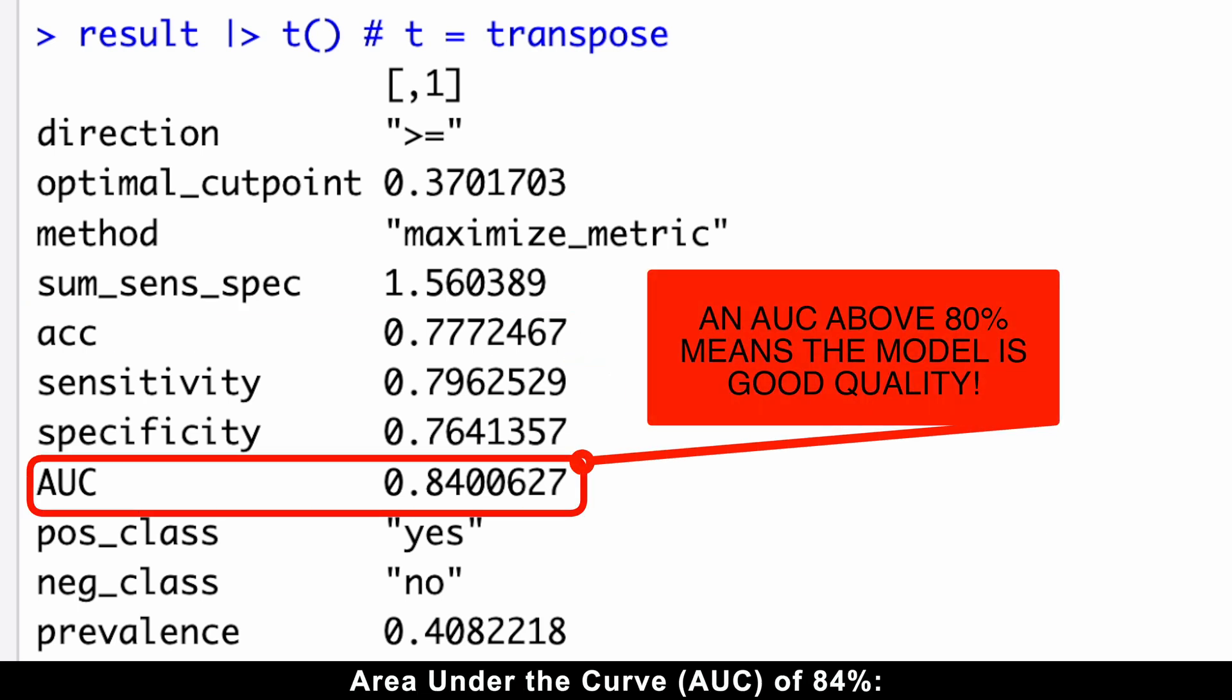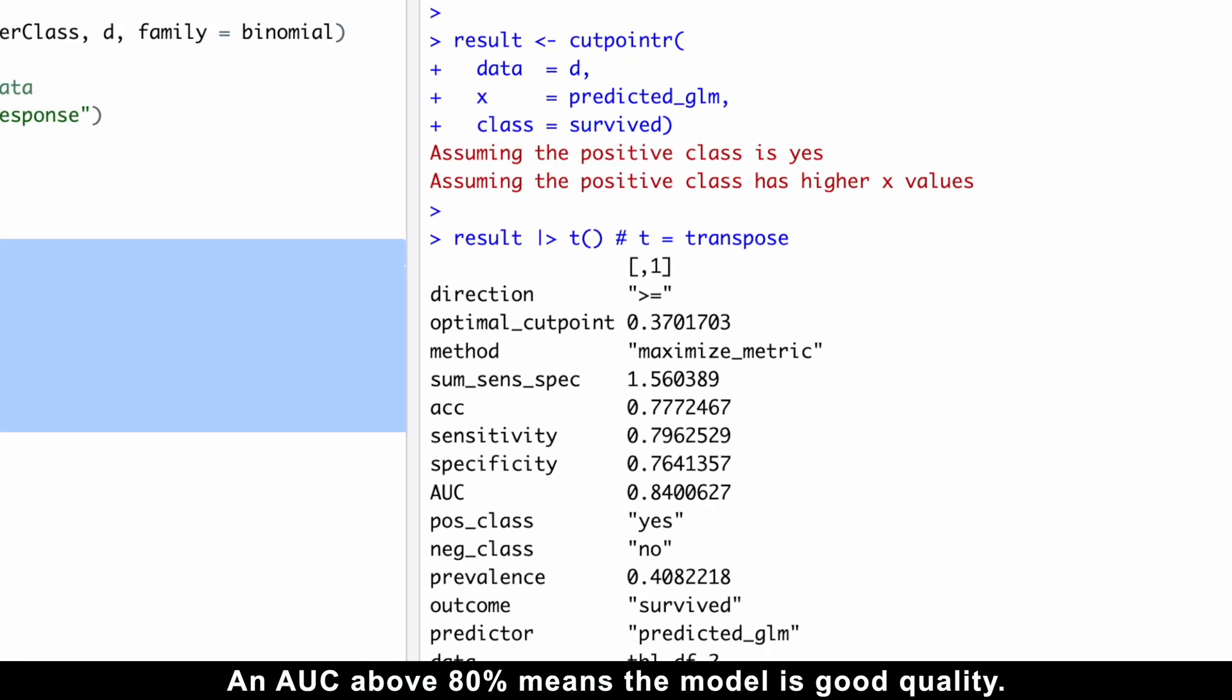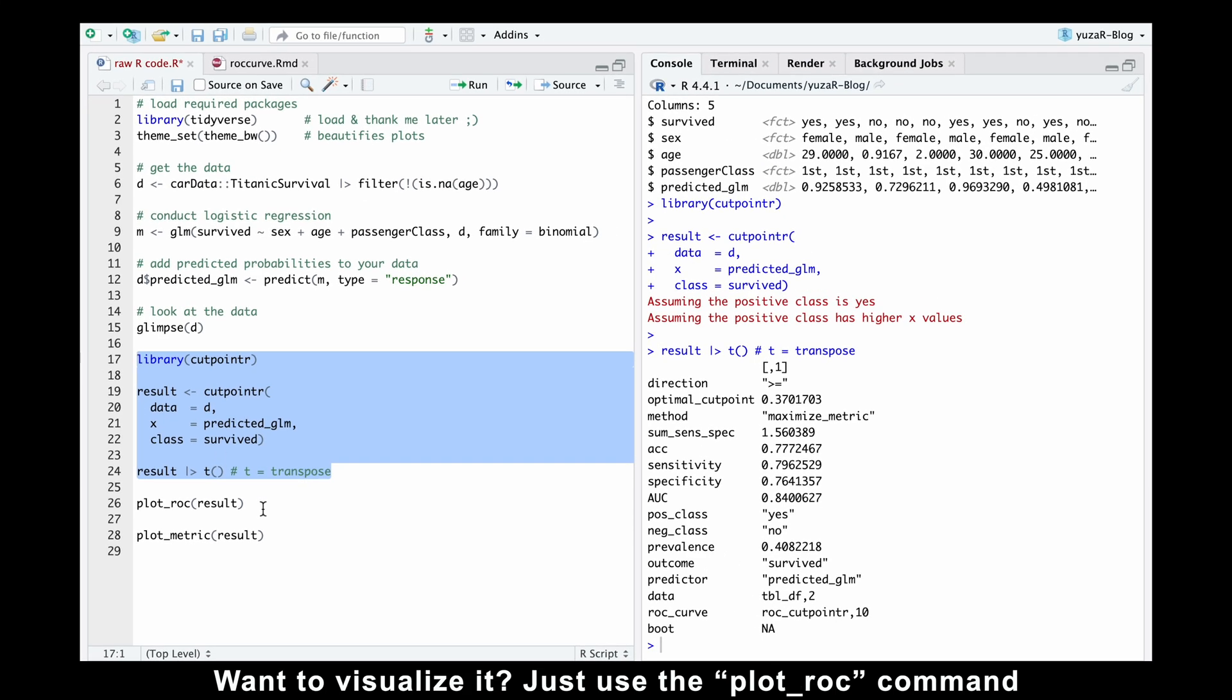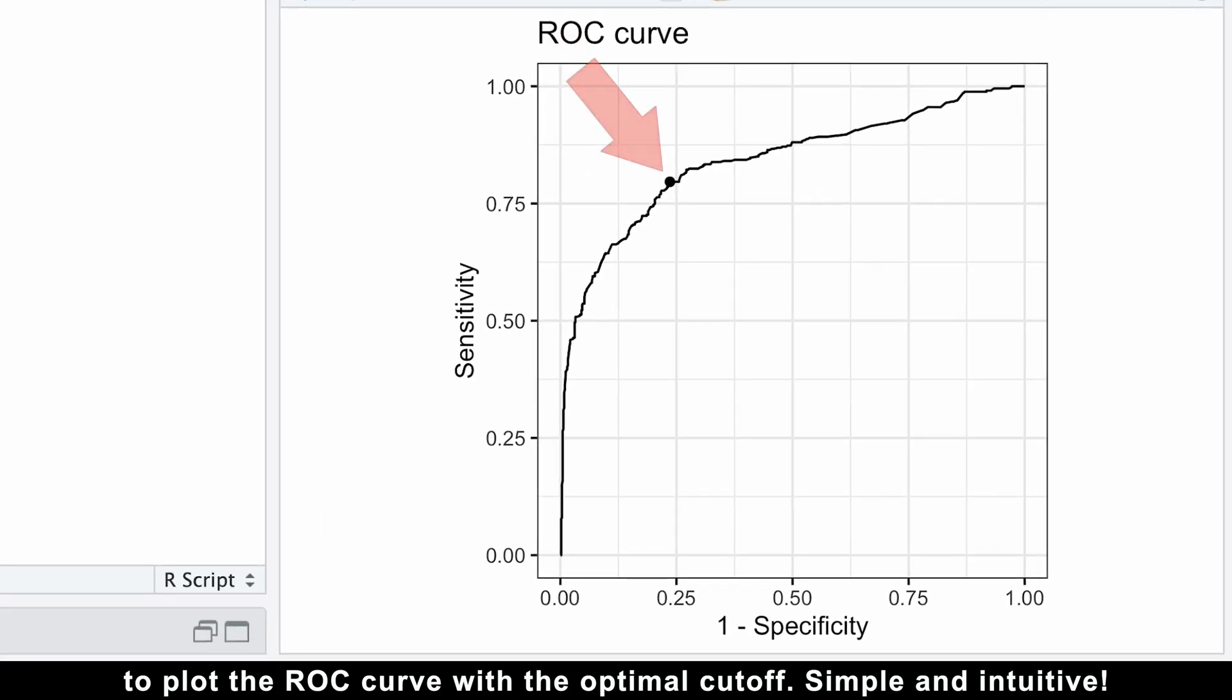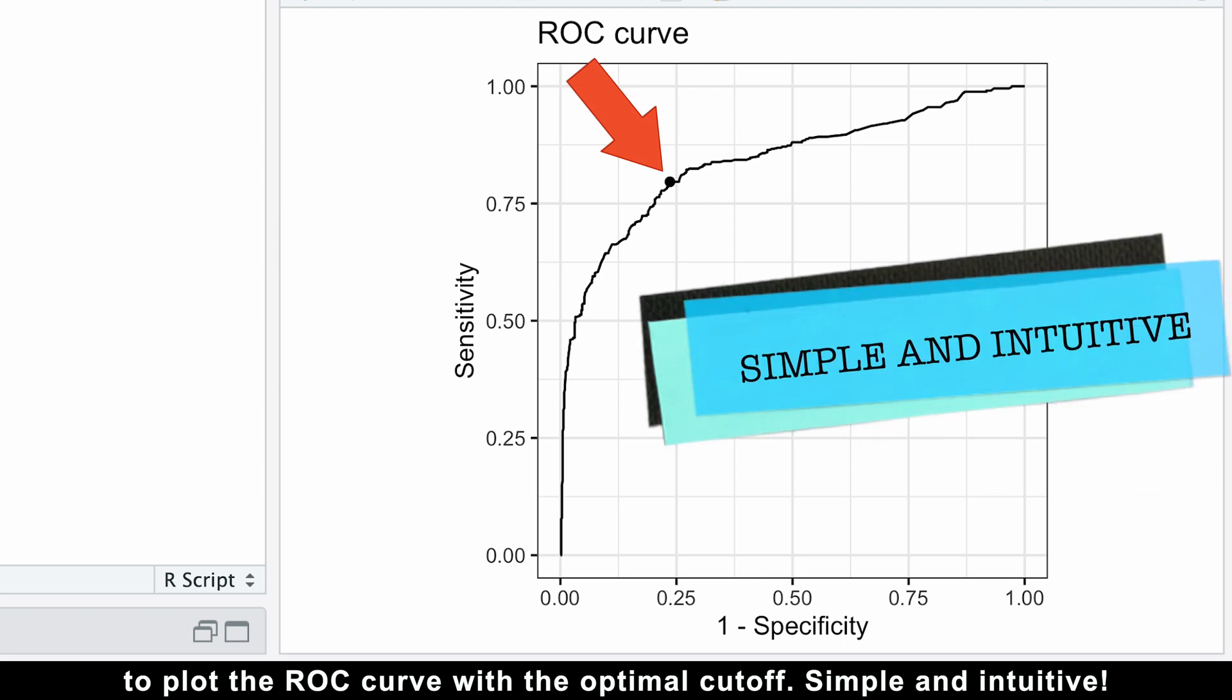Area under the curve, or AUC, of 84%. An AUC above 80% means the model is good quality. Want to visualize it? Just use the plotROC command to plot the ROC curve with the optimal cutoff. Simple and intuitive.